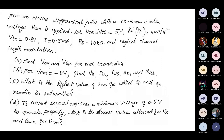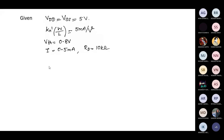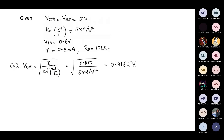The overdrive voltage is 0.3162 volts. Once the overdrive voltage is calculated, you can find VGS using the threshold voltage and the overdrive voltage. We know that overdrive equals VGS minus VT. Using this relation, VGS is calculated as 1.116 volts.